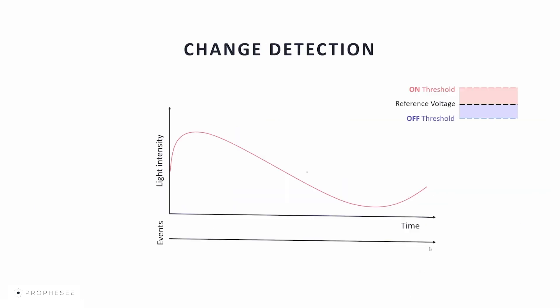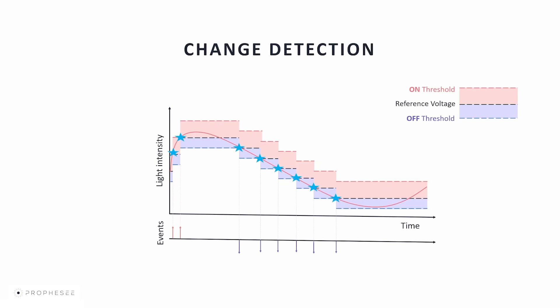The voltage is compared to two contrast sensitivity thresholds: the on threshold for an increase in light intensity, and the off threshold for a decrease. When the change detector voltage crosses the on threshold, a CD on event with positive polarity is generated and the voltage resets to the reference value. When it crosses the off threshold, a CD off event with negative polarity is generated and the voltage resets. If the voltage changes without crossing any threshold, no event is generated. These thresholds can be adjusted via sensitivity biases — a procedure called bias tuning — to optimize data for the environment and application.